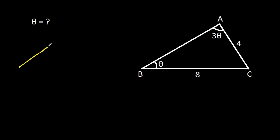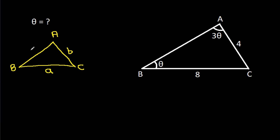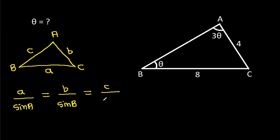So, in any triangle ABC, if BC is A, AC is B, and AB is C, then A by sin A is equal to B by sin B, and it is equal to C by sin C.